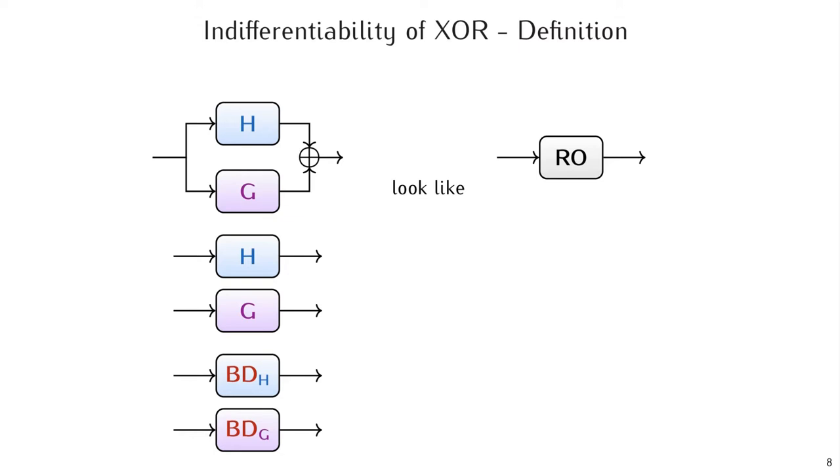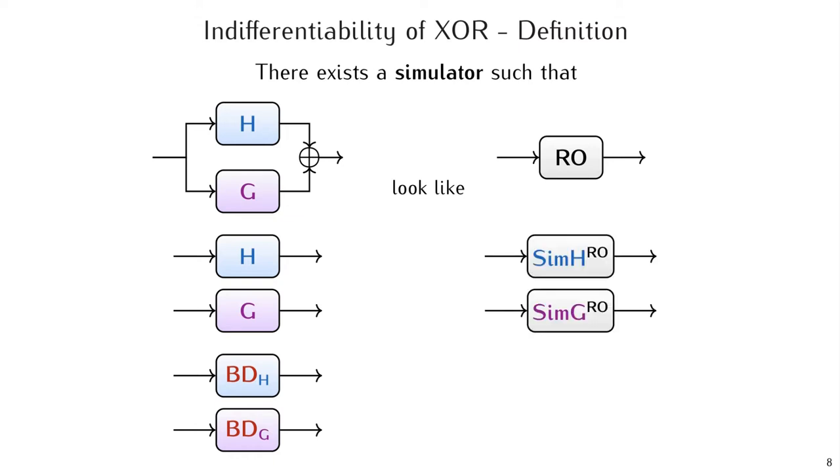On the right-hand side, clearly, we're missing some interfaces. So, indifferentiability, therefore, requires the existence of a simulator such that, with the help of the random oracle, RO, the simulator can simulate the extra interfaces for the adversary.